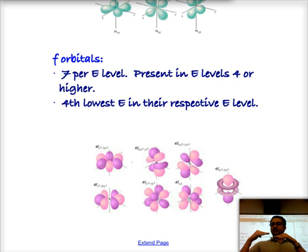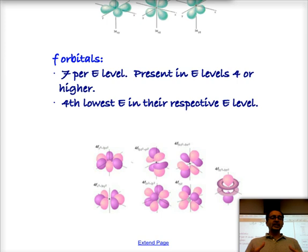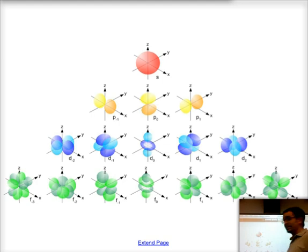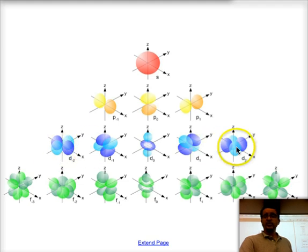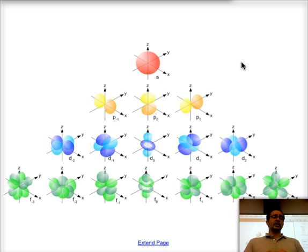If we think about a step ladder, we would have S at the bottom, then P, then D, and highest among the ones we study would be F. The ground state is when we fill electrons in order into the energy levels, starting from lowest energy. Here is an image showing all four types of orbitals together — the one S, the three P's, the five D's, and all seven F orbitals — each showing their shapes. You only really need to know that S is spherical and P's are like figure eights.